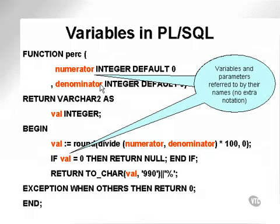Parameters numerator and denominator are referred to as numerator and denominator, and the locally declared val variable is referred to as val.